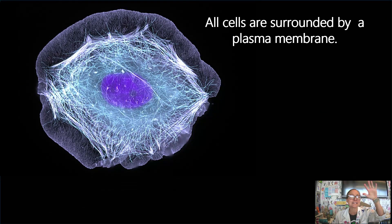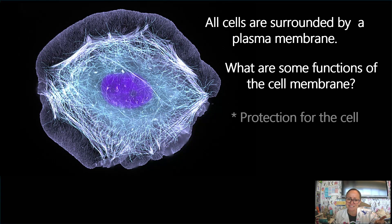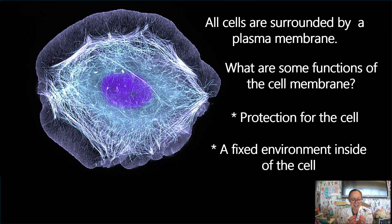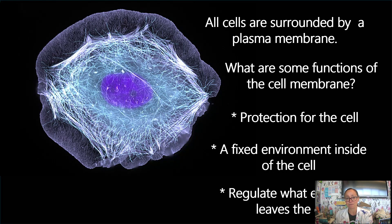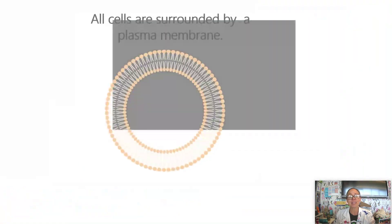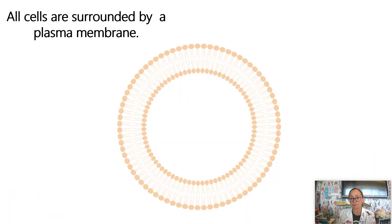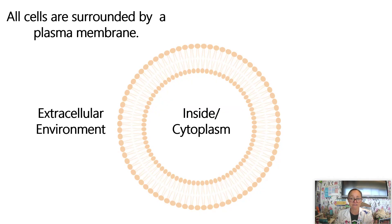When we think about this, all cells are surrounded by a plasma membrane. The functions of a cell membrane include protection for the cell, maintaining a fixed environment inside that separates it from the outside, as well as regulating what can enter and leave a cell. A plasma membrane surrounds all cells, whether prokaryote or eukaryote, and it separates the inside — the cytoplasm — from the extracellular environment.